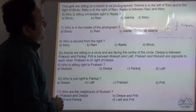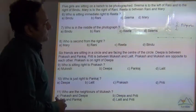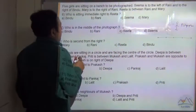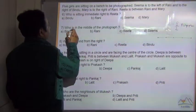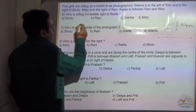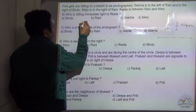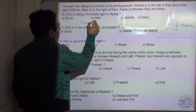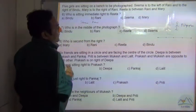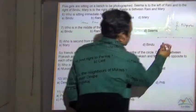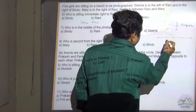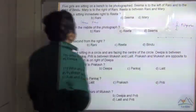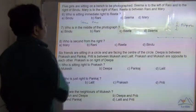Sima is left of Rani. So Sima can be in positions here, here, here, or here — meaning Rani is always to the right of Sima. That is the first piece of information.